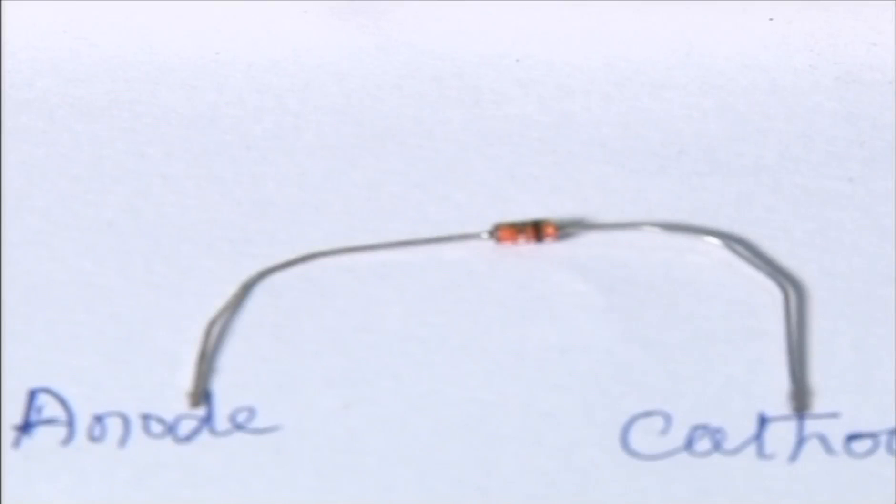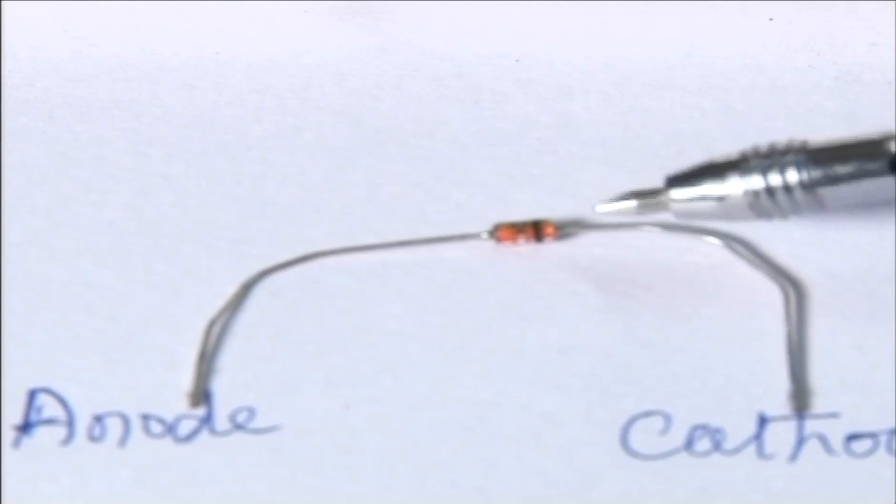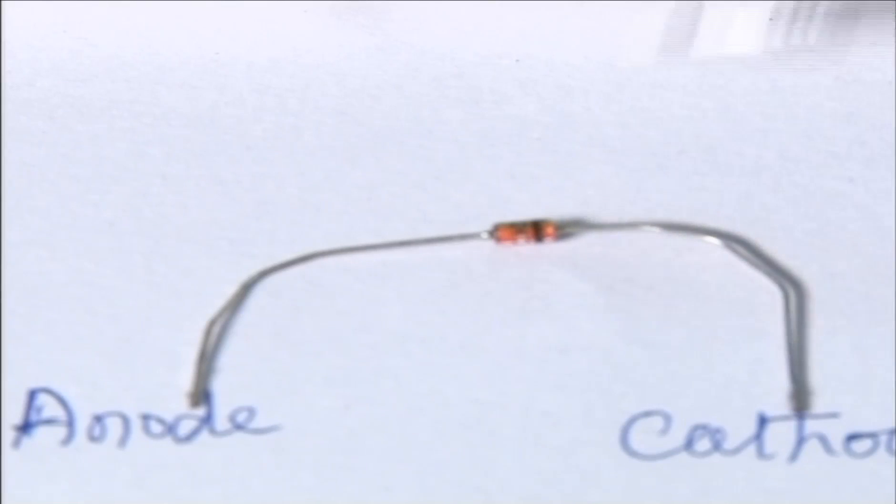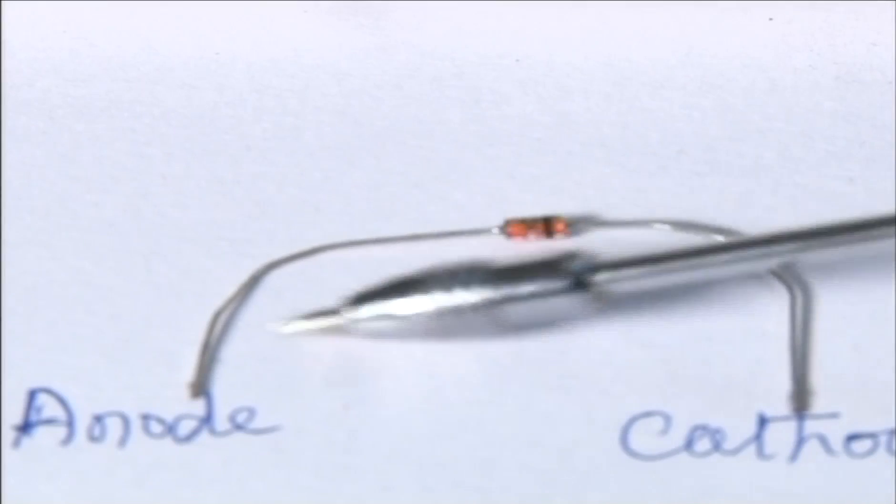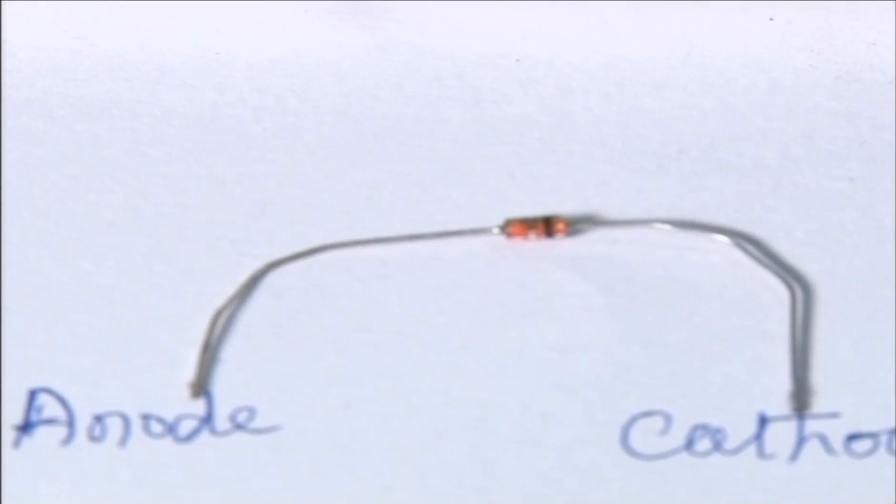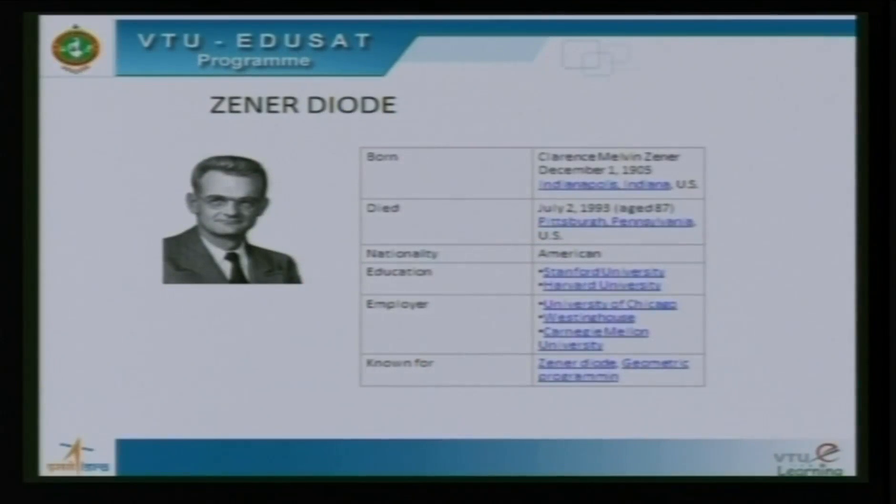Terminals of Zener diode: The terminal towards the dark line drawn on the Zener diode is identified as cathode and the other terminal is identified as anode. This diode is invented by a Zener American scientist named after him.